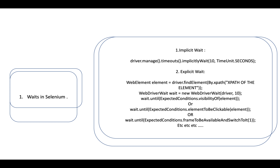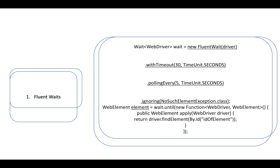Explicit wait means you are specifically waiting for some element along with some condition to be true before performing the next set of actions. You create a WebDriverWait object, passing the driver and the time, and then wait until some expected condition — such as visibility of element, element is clickable, element is available, or frame is available. That's the syntax for explicit wait.